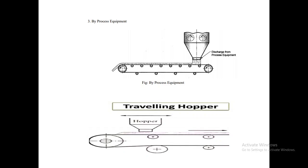These four methods are used for feeding or loading material to the flat belt conveyor: by hopper (stationary), by preceding conveyor (using a receiving and discharging conveyor), by process equipment (hopper, crusher, mixer, etc.), and by traveling hopper (where the feeding point shifts with the position of the traveling machine).